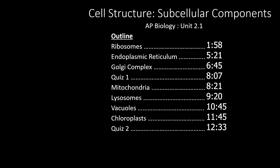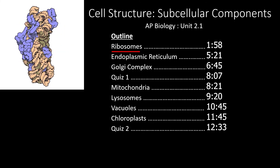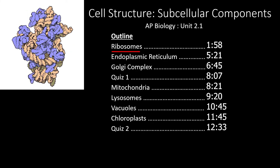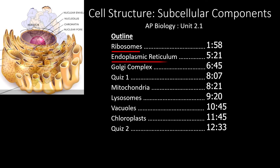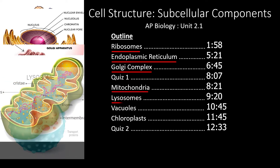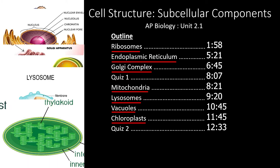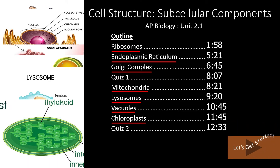Here is a quick overview of the topics we will be covering. First, we will take a look at ribosomes and how they create proteins based on the information from messenger RNA. Then, we will take a quick look at the endoplasmic reticulum and the Golgi complex, two critical organelles within the endomembrane system. After that, we will run through the structures and functions of mitochondria, lysosomes, vacuoles, and chloroplasts. If you only need to review one of these topics, feel free to skip to the times outlined here.